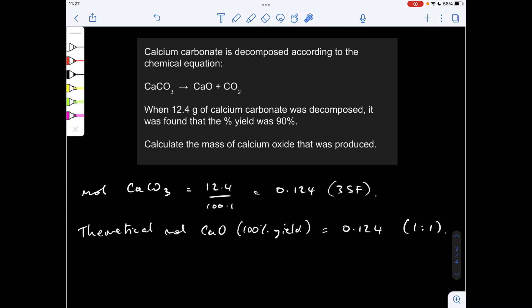So we should expect to get, if there was a 100% yield, 0.124 moles of that as well from that ratio. Now the next thing you can do, you can either plug the numbers into the formula and rearrange it, or sometimes it's better to just think your way through now. So we should get 0.124 moles, but we know that the yield is only 90%. So we're actually going to get 90% of that value.